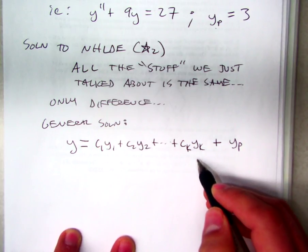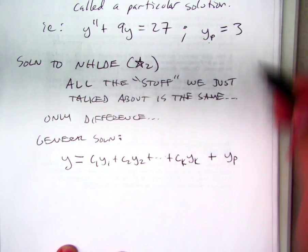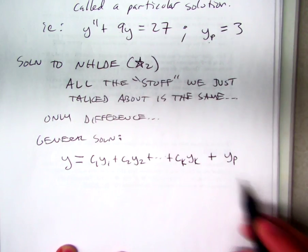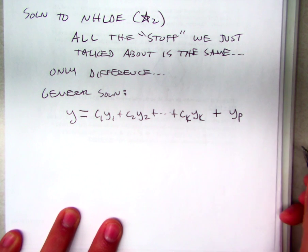So we're still doing superposition principle, if you think about it. Because these first K terms are found by superposition, right? And if we know a particular solution, like up here, that 3 works, then we could also use superposition here. And then this is what we call the general solution.